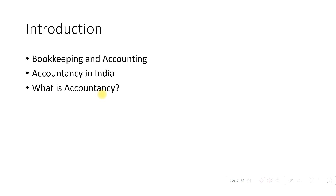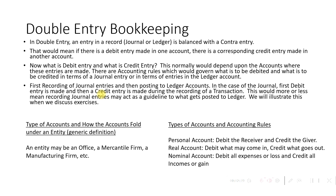Now let us see what is double entry bookkeeping — the concept we actually use in accounting. In double entry accounting, an entry is made in a record which is a journal or ledger. There are two types of records: the journal, where we actually make entries, and the ledger, where we keep track of all accounts.